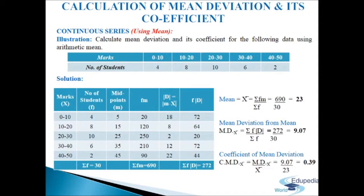Mean deviation from mean MD(mean) = sigma f·d / sigma f = 272 / 30 = 9.07. Coefficient of mean deviation C·MD(mean) = MD(mean) / mean = 9.07 / 23 = 0.39. This is how we calculate mean deviation and its coefficient in continuous series.